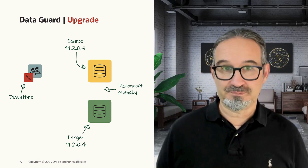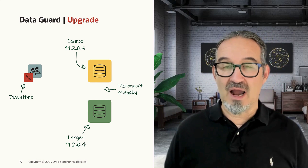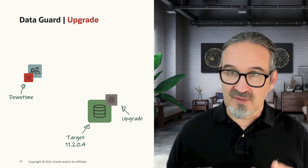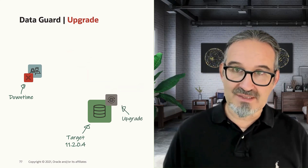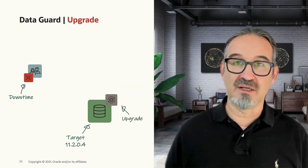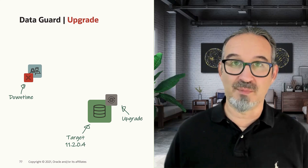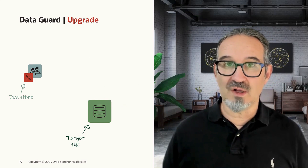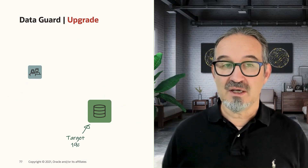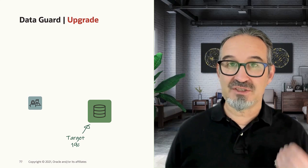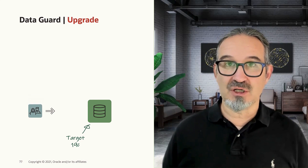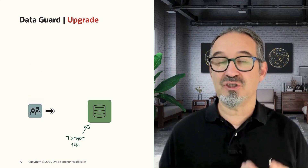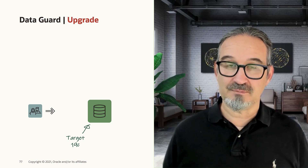At this point, we can now activate the standby. And once the standby is activated, we can afterwards upgrade it to 19c. Once it's upgraded, we can now start the application on the previous standby site, which is now our new production database.